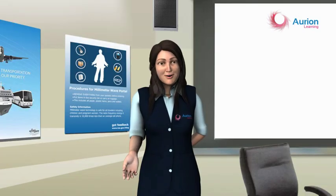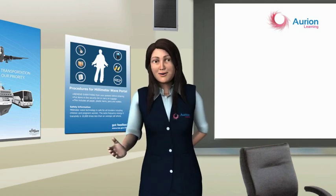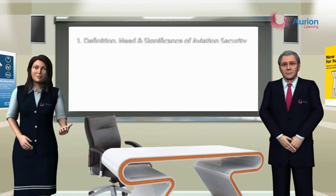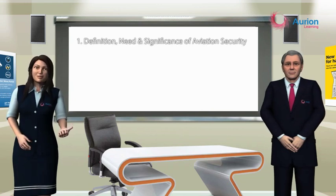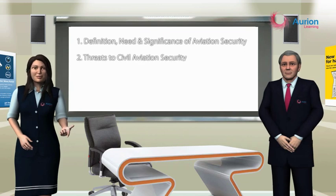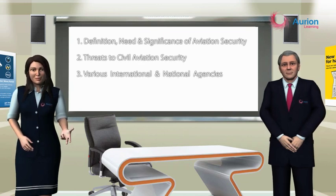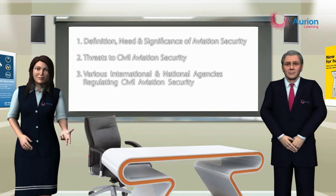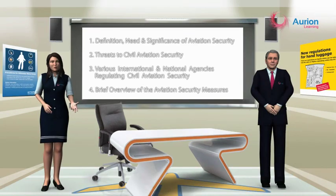That brings us to the end of Module 1. In this module, we have learnt: Definition, need and significance of aviation security. Threats to civil aviation security. Various international and national agencies regulating civil aviation security. And a brief overview of the aviation security measures. Thank you.